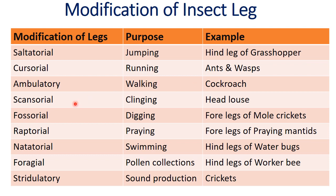Scansorial legs serve a clinging purpose — the example is head lice. Fossorial legs serve a digging purpose — examples are the fore legs of mole crickets. Raptorial legs serve a grasping purpose — the example is the fore legs of praying mantids.